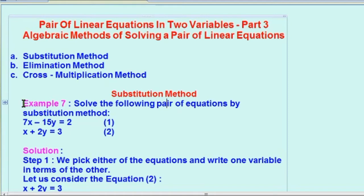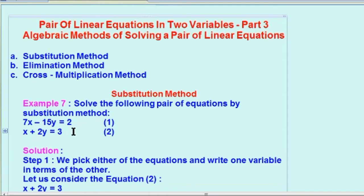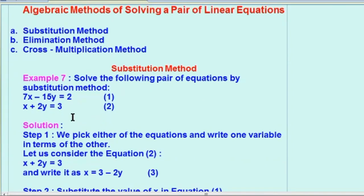तो सीधे हम start करते हैं example से. आपके जो NCERT की book है उसमें है example seven: Solve the following pair of equations by substitution method. यहाँ पर दो equations दिये हैं. First equation है 7x minus 15y equals to 2 और second equation है x plus 2y is equal to 3. इसे हम solve करना चाहते हैं substitution method से.